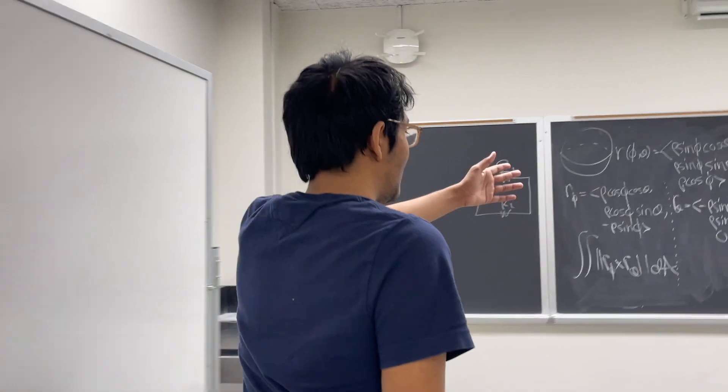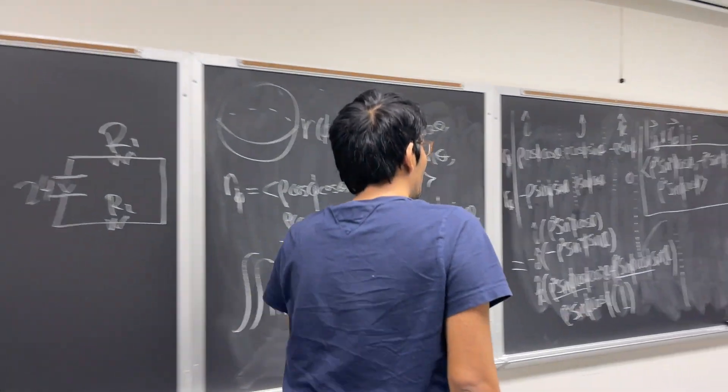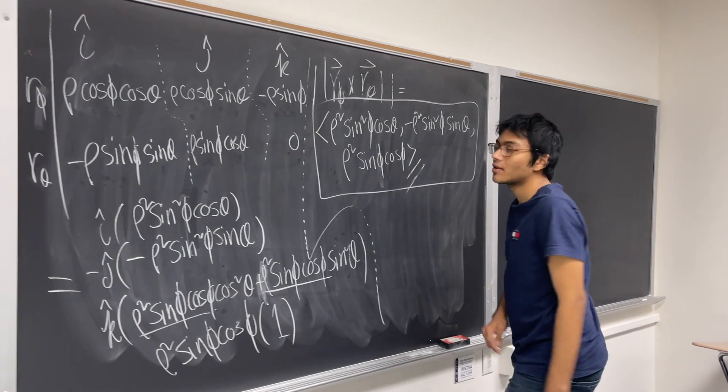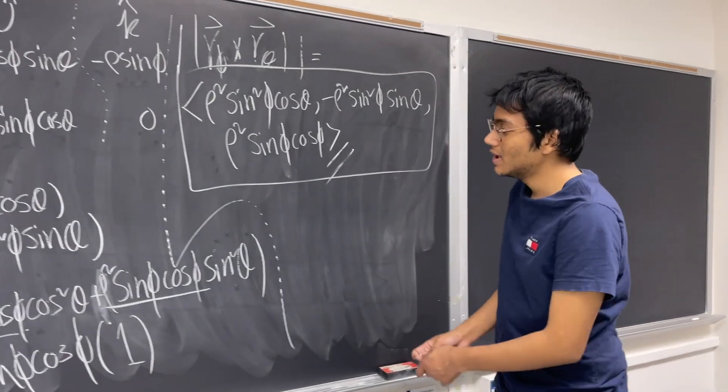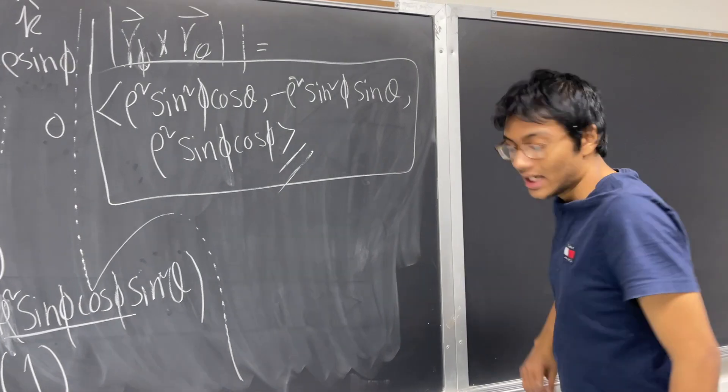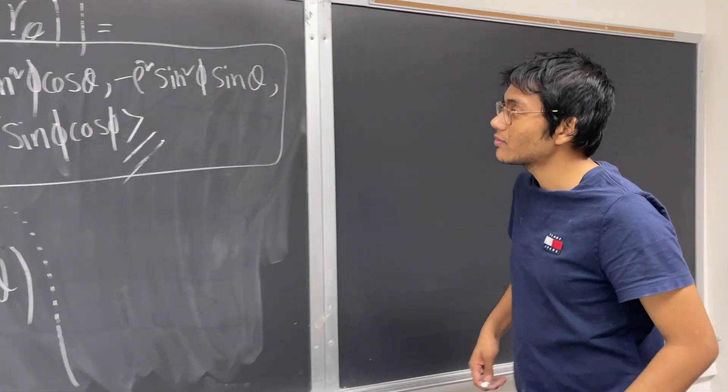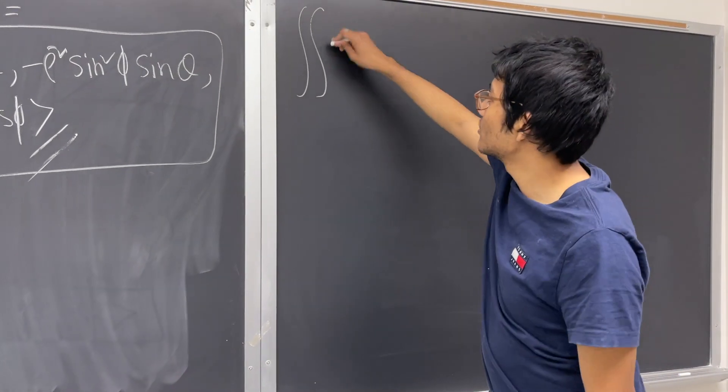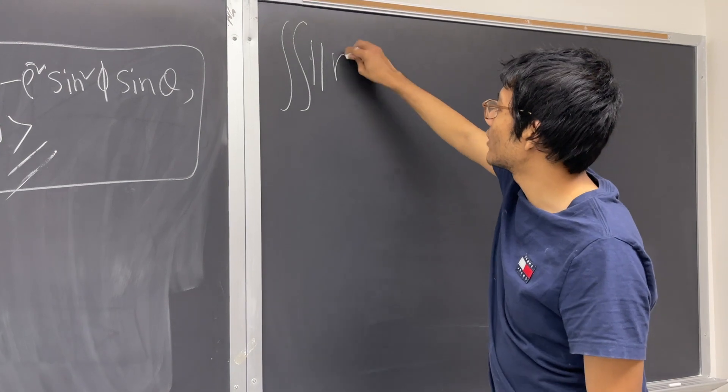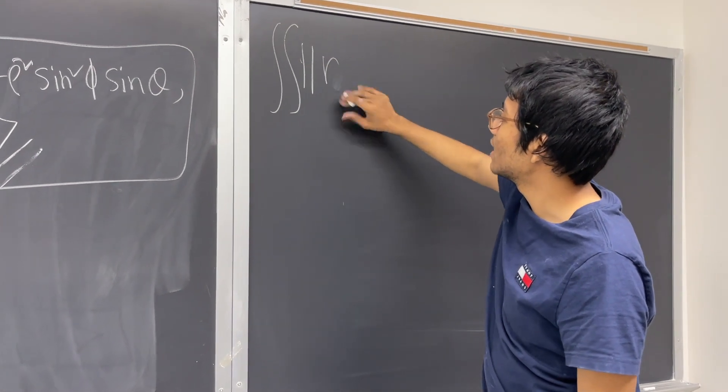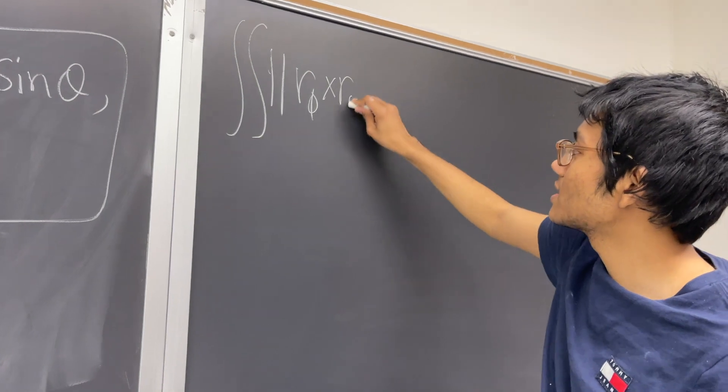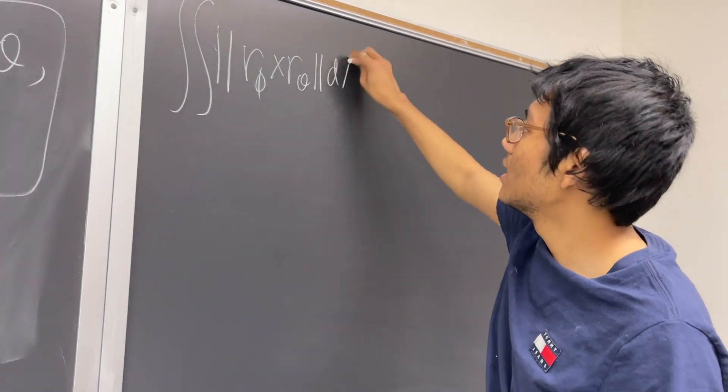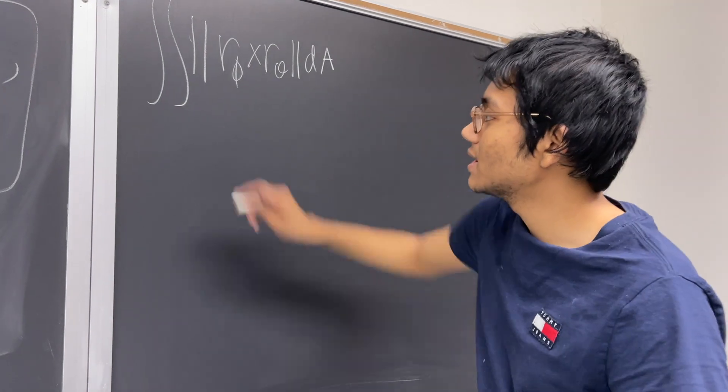So we're going to use our results from the last few episodes, so if you have not checked them out, make sure you do. And so let's start off with the cross product we calculated from the previous lecture. So it looks like we have some empty space here, so I'm going to take advantage of that. So our double integral is going to be the magnitude of our cross product, so r sub phi cross r sub theta.